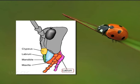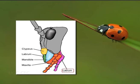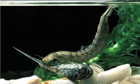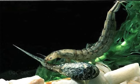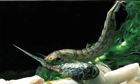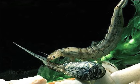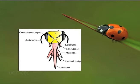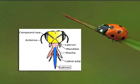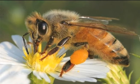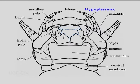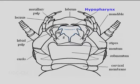The labium is formed from two fused secondary maxillae and can be described as the floor of the mouth. With the maxillae, it assists manipulation of food during mastication. The unusual case of the dragonfly nymph: it extends out to snatch prey back to the head where mandibles can eat it. In the honeybee, the labium is elongated to form a tube and tongue, and these insects are classified as having chewing and lapping mouth parts. The hypopharynx is a somewhat globular structure arising from the base of the labium and assists swallowing.